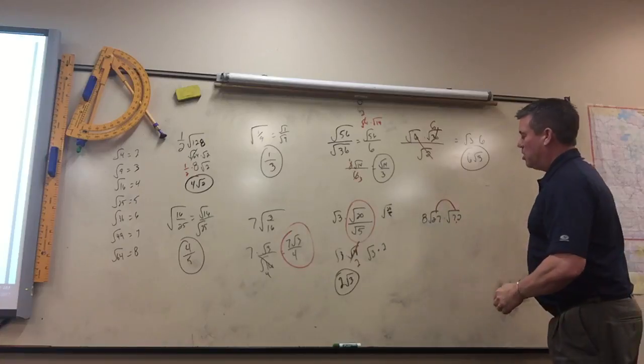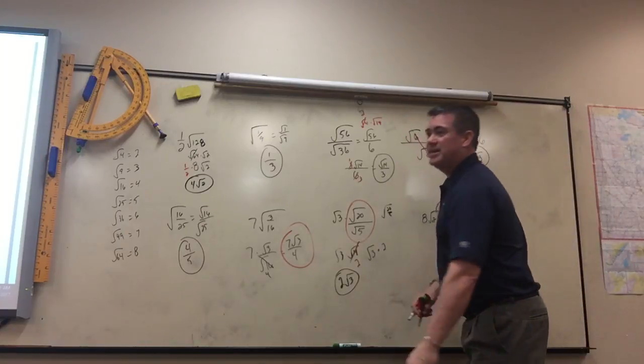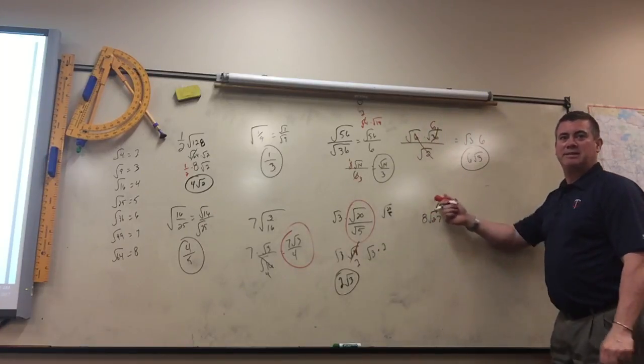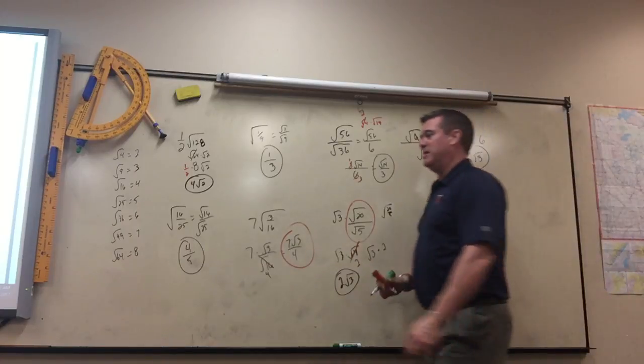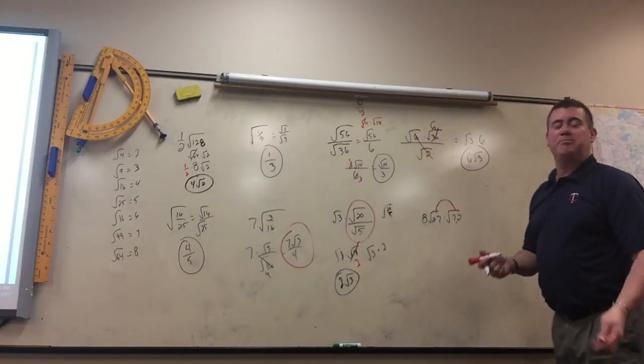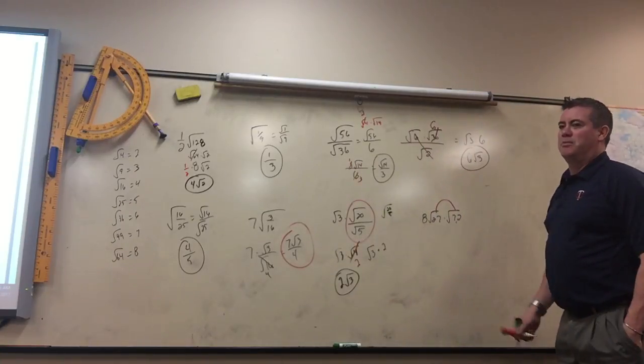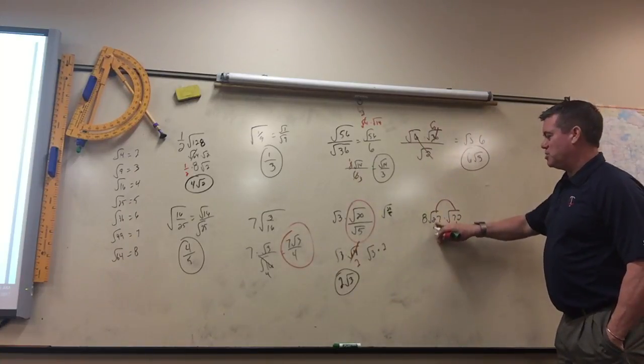Or you can multiply those two together, but you'd get a huge number. 27 times 72 is really big, and it's kind of hard to find a perfect square. You might be simplifying quite a bit. So since these are small numbers to work with, I would just do this one first.